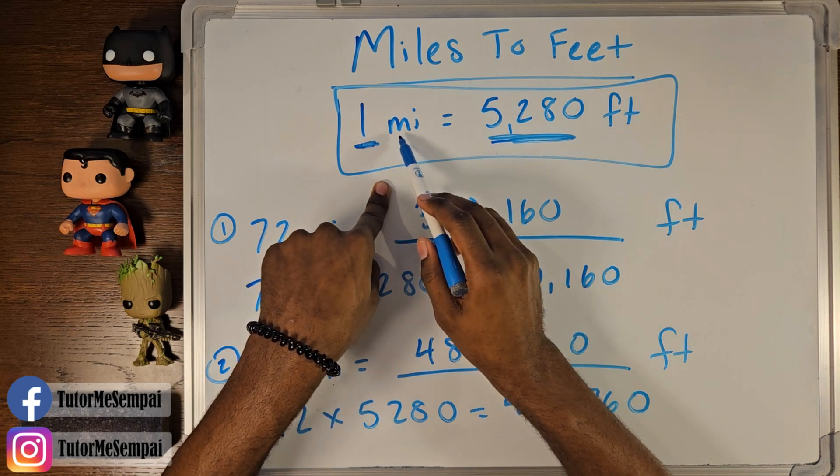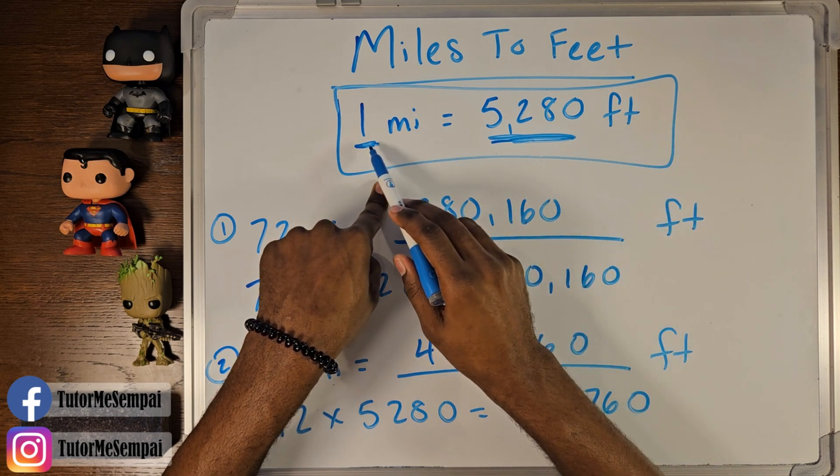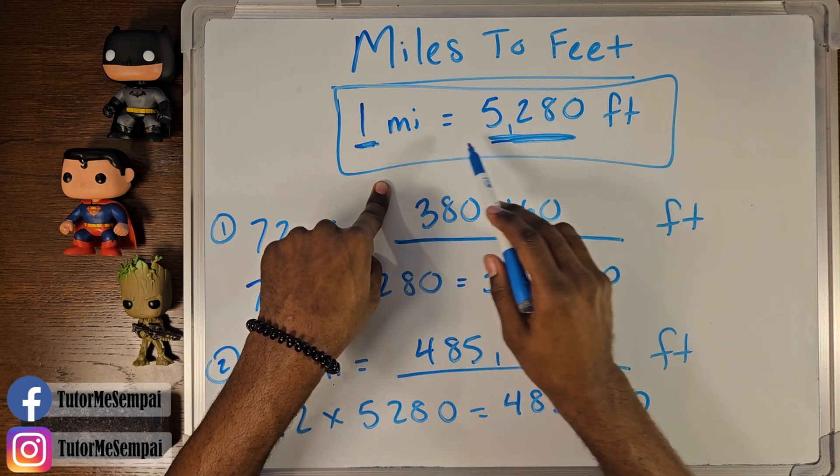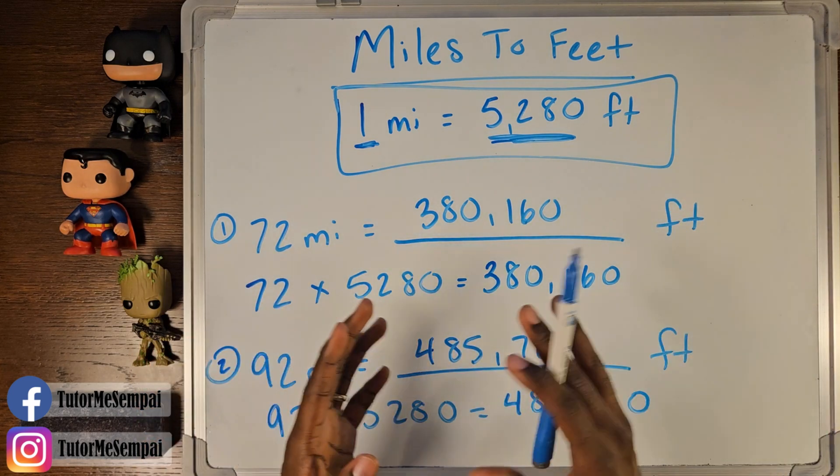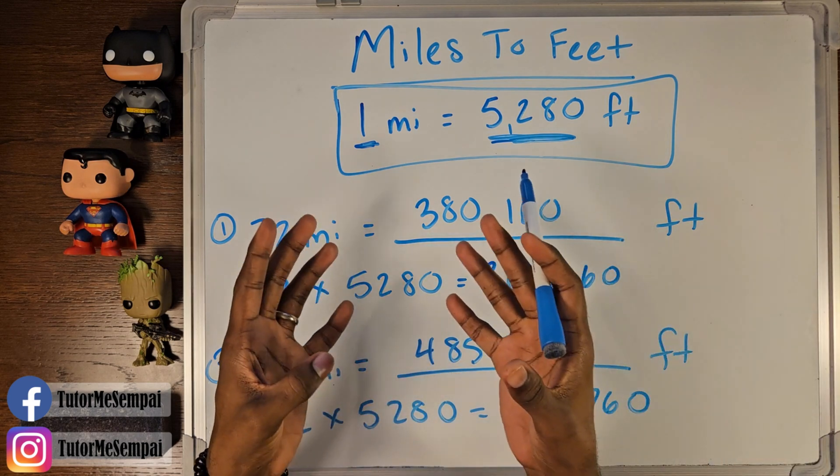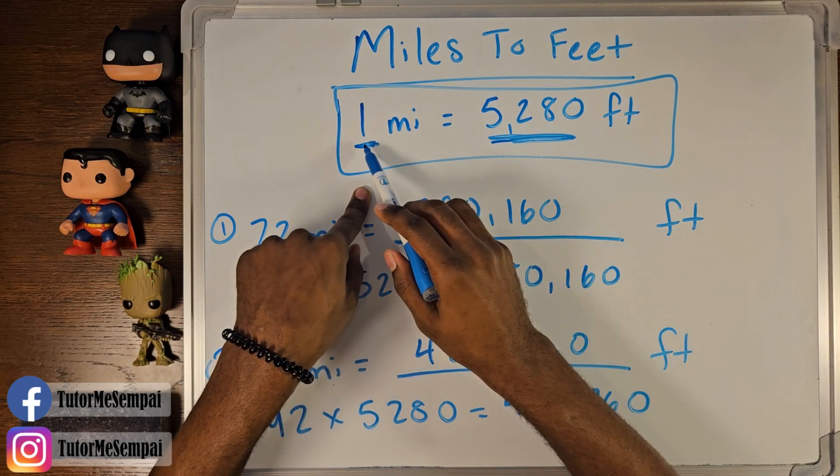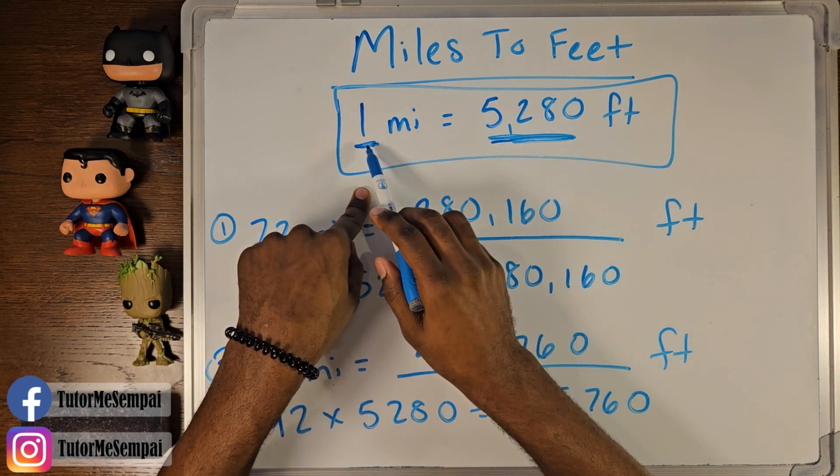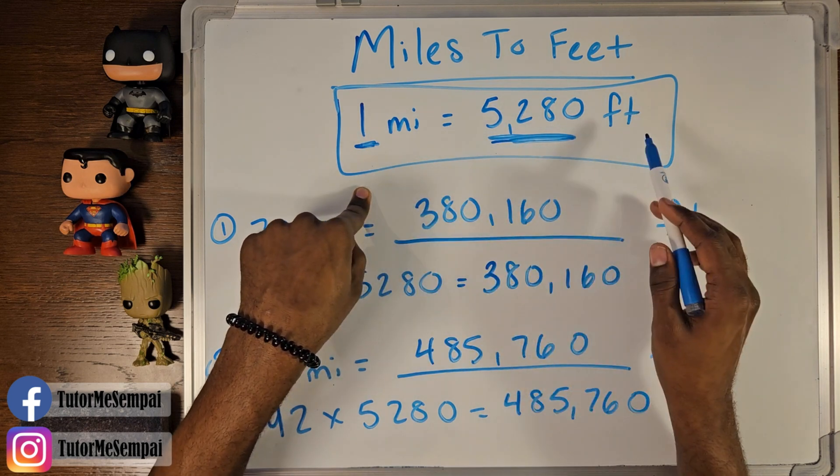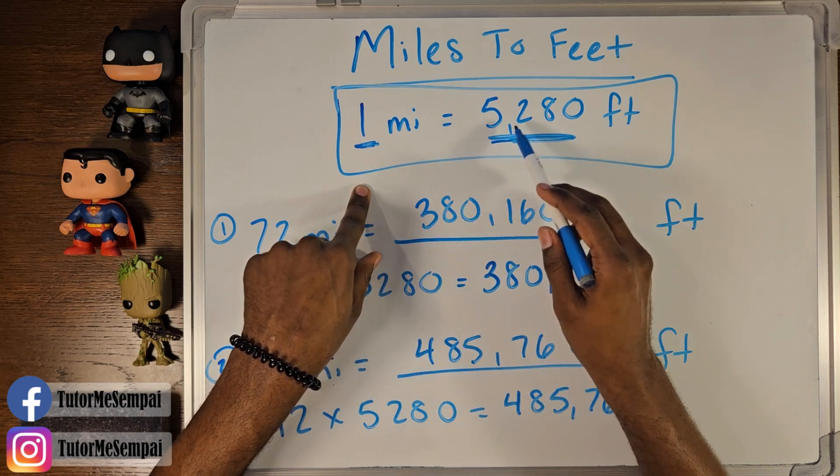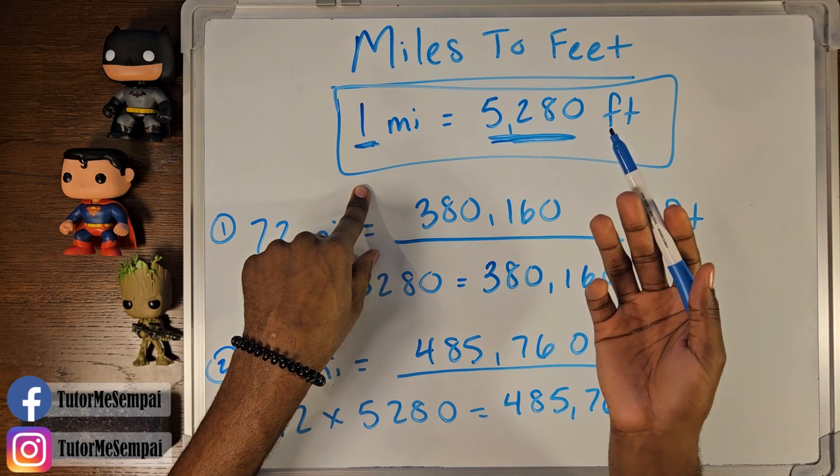Notice the number attached to miles is less than the number attached to feet. So if you're going from miles to feet, you want to have a bigger number. Typically, when you're thinking of bigger numbers or growing numbers, you're not really thinking of dividing. You're thinking of multiplying. Multiplying gives you a bigger number. So when you're going from miles to feet, miles being this smaller number here, to a large number for feet, you're multiplying. When you're going from feet to miles, you're going from having a large number here to a smaller number, which makes you think of division.